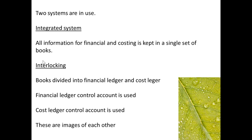There are two systems in use: the integrated system and the interlocking system. The integrated system is where all the information for financial and costing is kept in a single set of books, and that is what this podcast will be looking at. The interlocking system is where the books are divided into a financial ledger and a cost ledger, and those will be looked at in our next podcast.